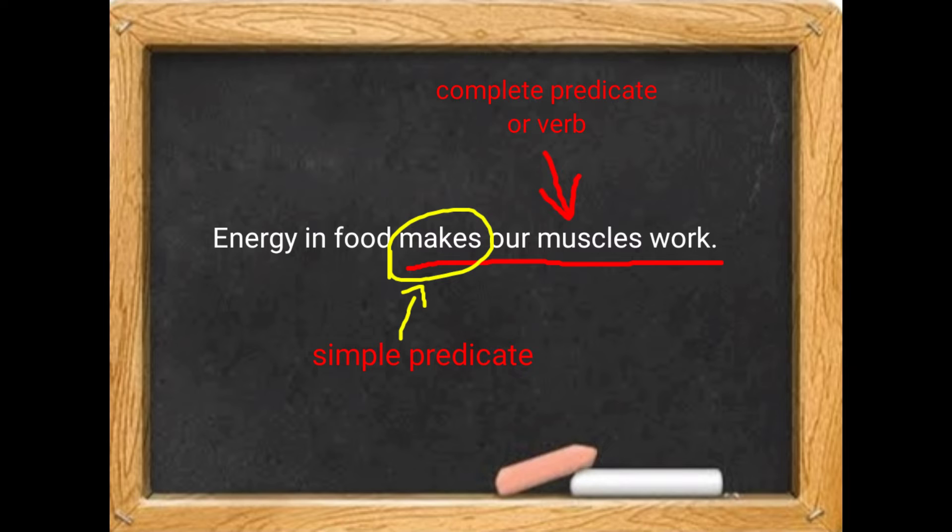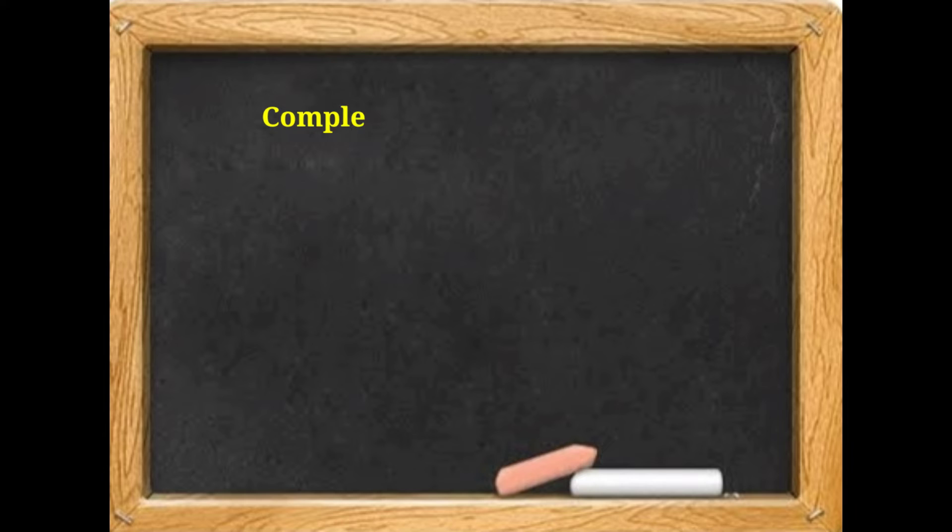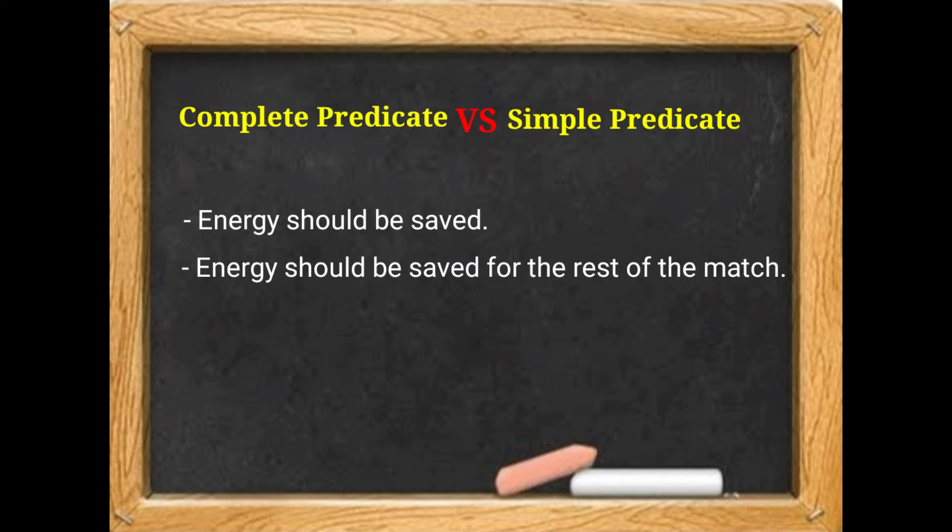Now let's compare between complete predicate and simple predicate. Let's see the differences when we compare the two given examples: Energy should be saved, and energy should be saved for the rest of the match.